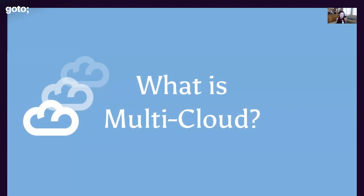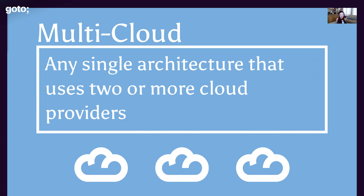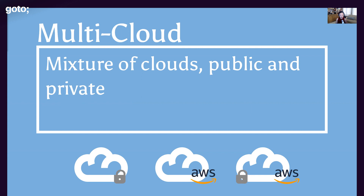So what is multi-cloud? For the context of this presentation, it's a very simple definition: it's really any single architecture that involves two or more cloud providers. Those cloud providers can be a mix of public or private. We're going to focus on the big three — GCP (Google Cloud), AWS (Amazon Web Services), and Azure (Microsoft Azure). But for the most part, multi-cloud is two or more clouds.